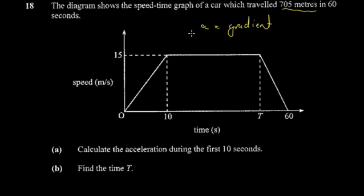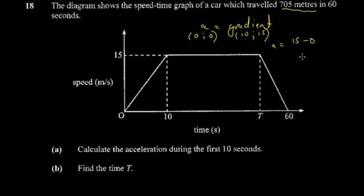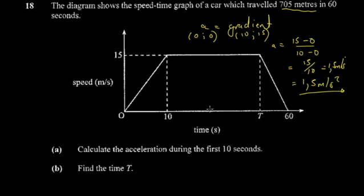I'm going to show you a fast and useful way of working out any speed-time graph when you're asked to find acceleration. Identify two points: here I'm checking (0, 0) and (10, 15) — think of it as the Cartesian plane. Gradient equals change in y over change in x: (15 − 0) divided by (10 − 0) = 15/10 = 1.5. Then put the units for acceleration: meters per second squared.